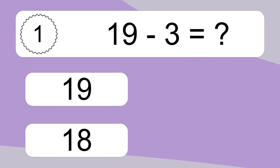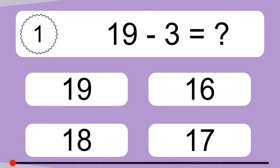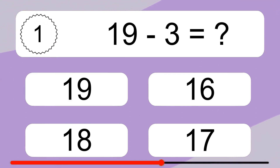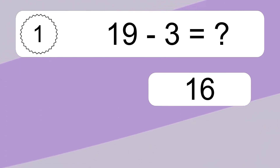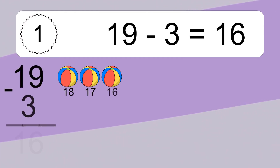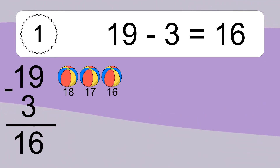19 minus 3 equals what? 19 minus 3 equals 16. Let's count it: 18, 17, 16.